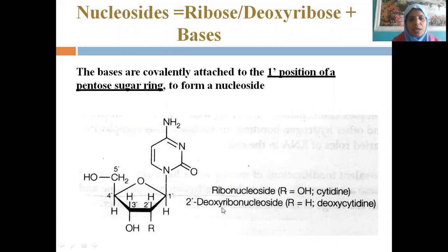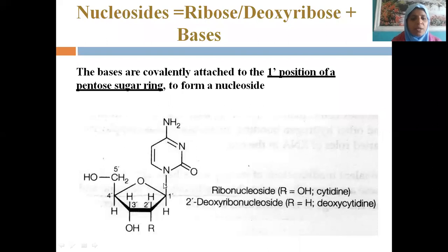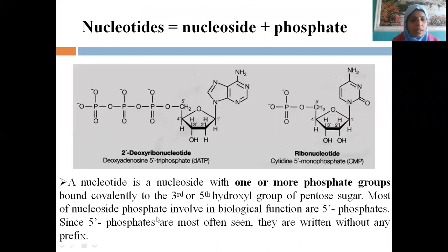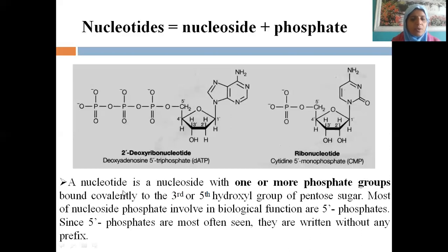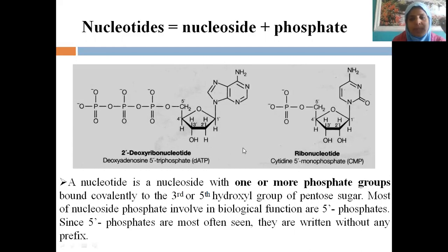The nitrogen base is covalently attached to the first position of the pentose sugar ring. The phosphates can be one, two, or three in number. If three phosphates, it is called triphosphate — adenosine triphosphate. If one phosphate, it is called monophosphate. A nucleotide is a nucleoside with one or more phosphate groups. Without phosphate, the term used is nucleoside; with phosphate, the term is nucleotide.